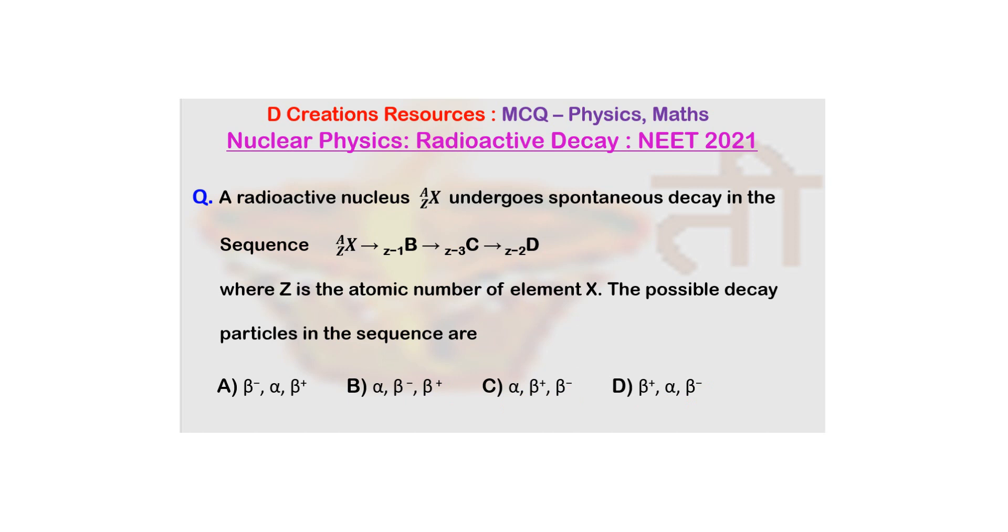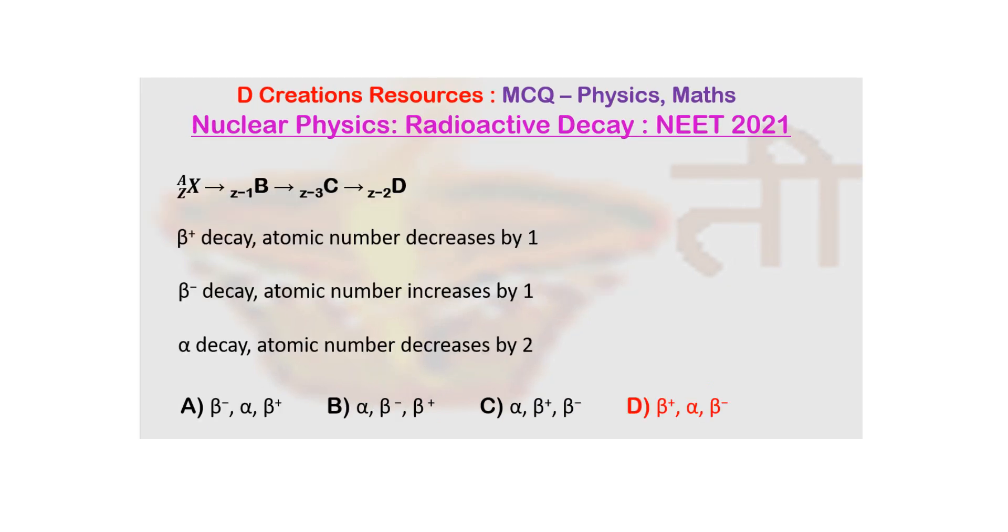If you know the answer, mark it - you can pause the video, mark it and then resume. If you do not know the answer, let me quickly remind you of how the atomic number changes when beta minus, alpha, and beta plus particles are emitted.